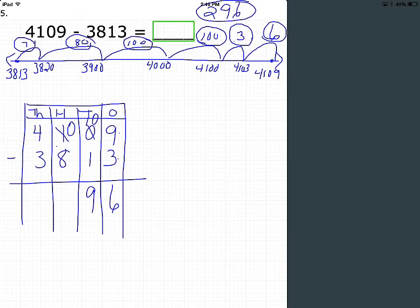We have to regroup again in the hundreds place, so we take 1,000, regroup it as 10 hundreds, then subtract the hundreds. 10 minus 8 is 2, and we get 296.